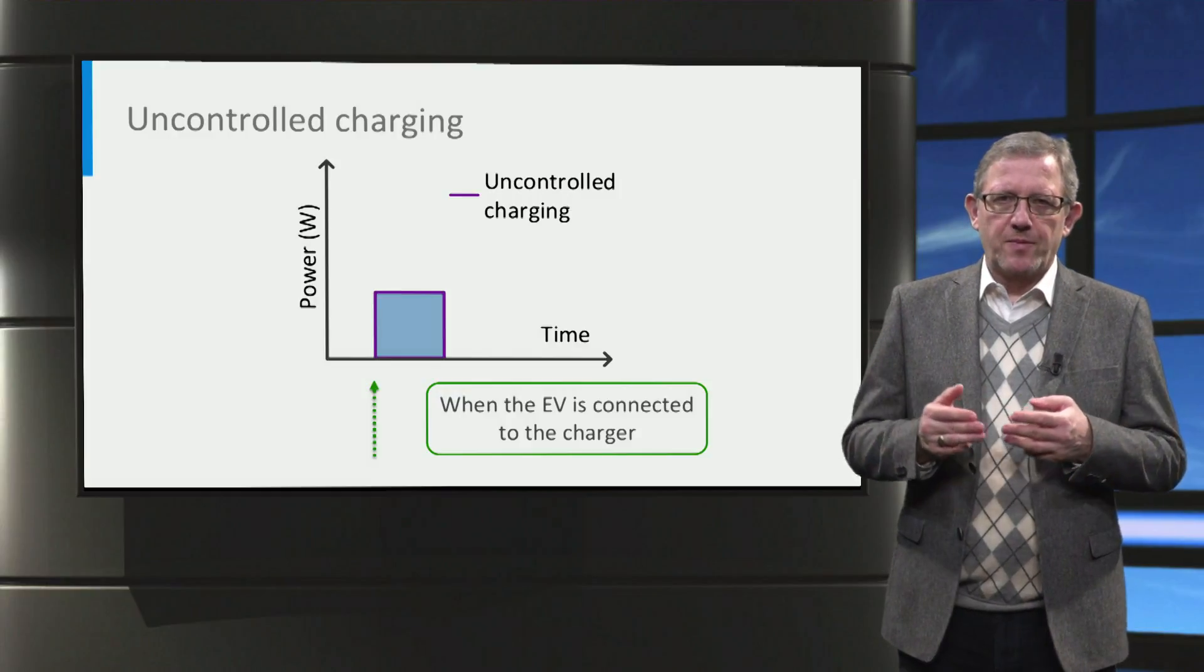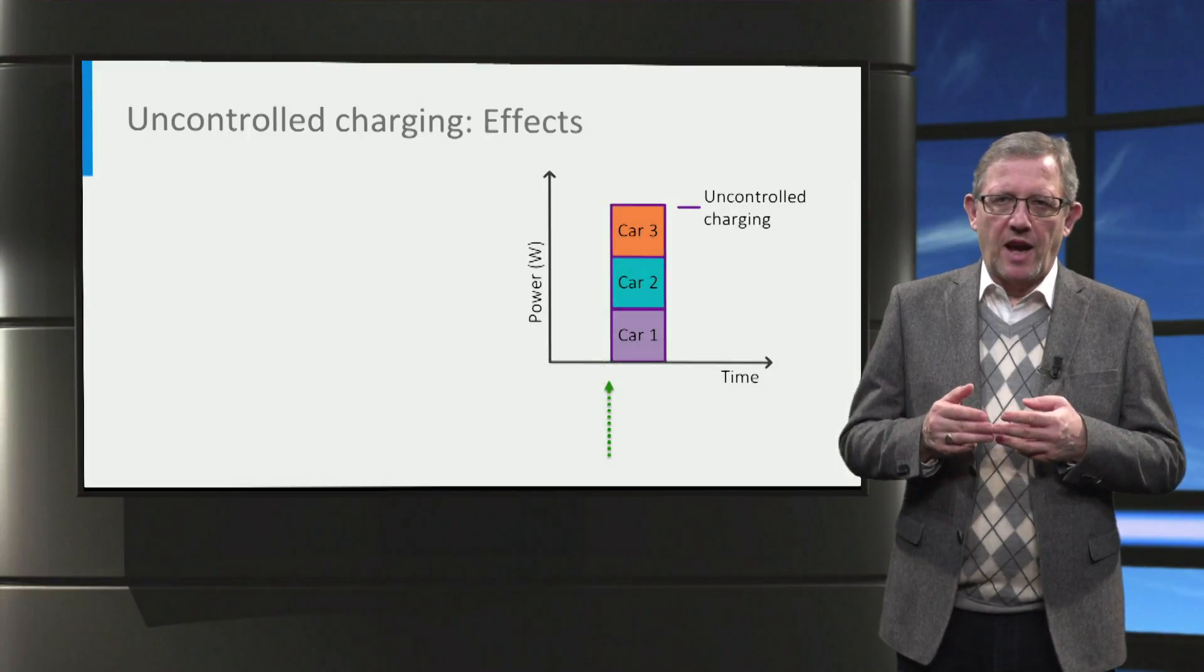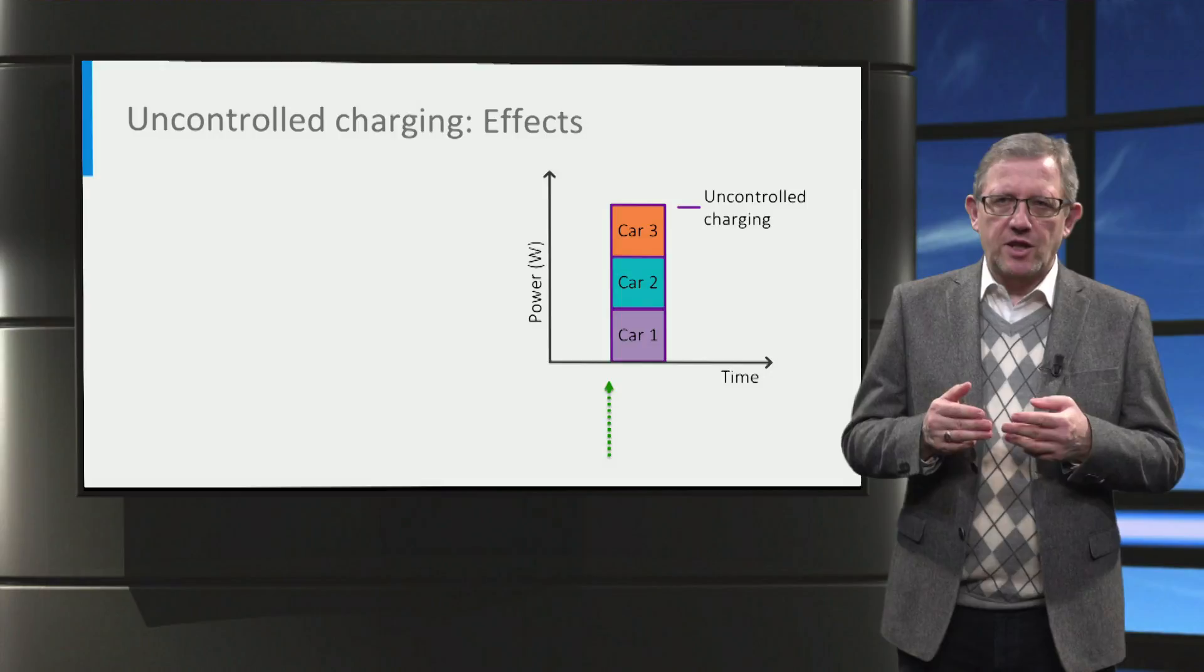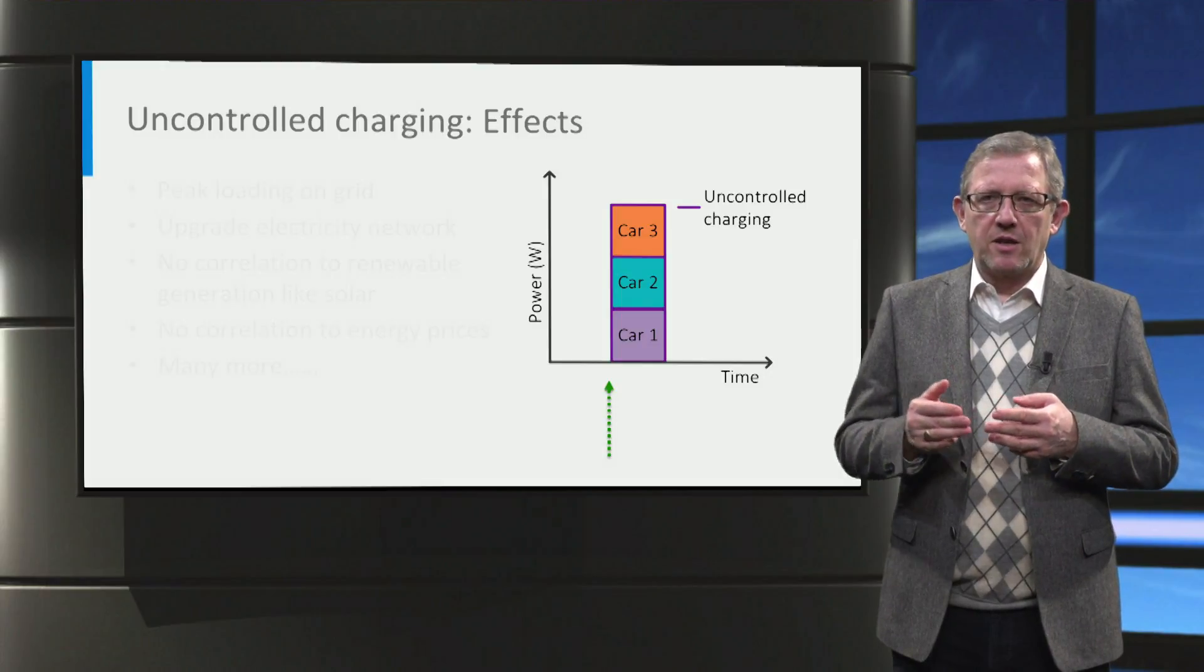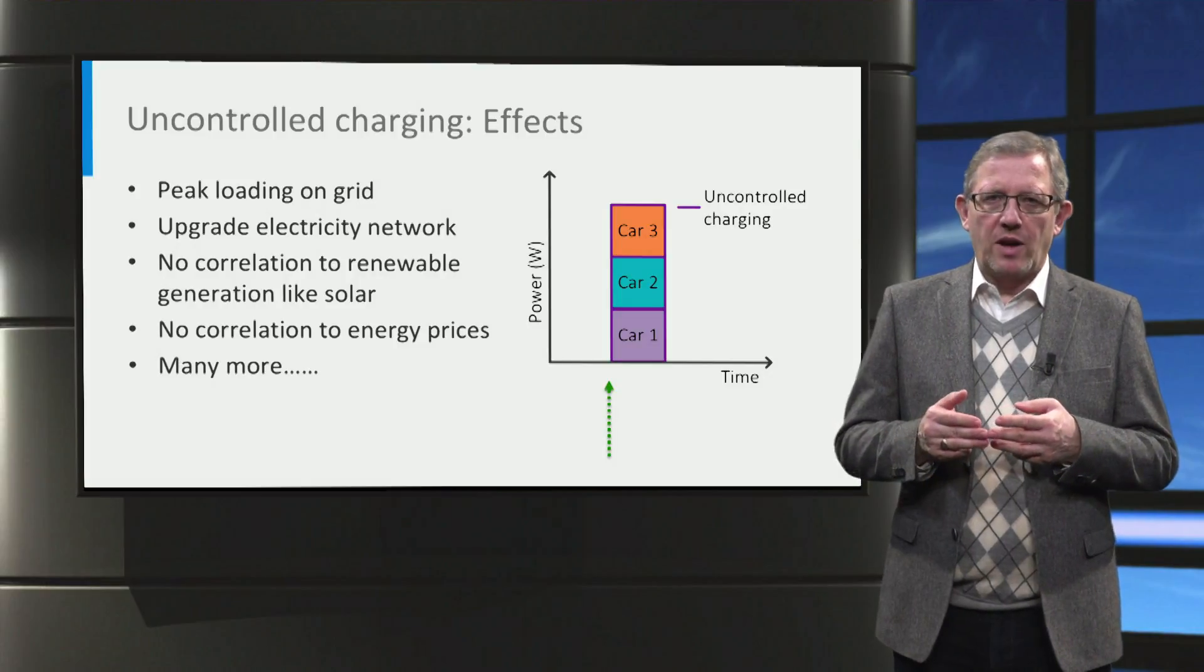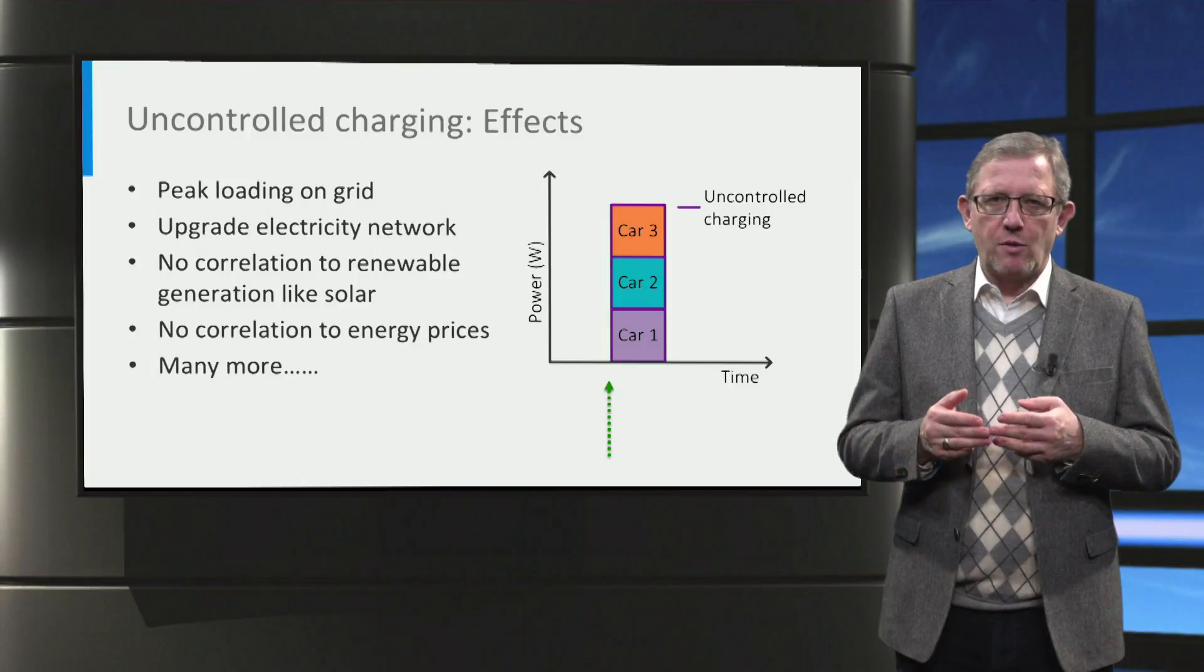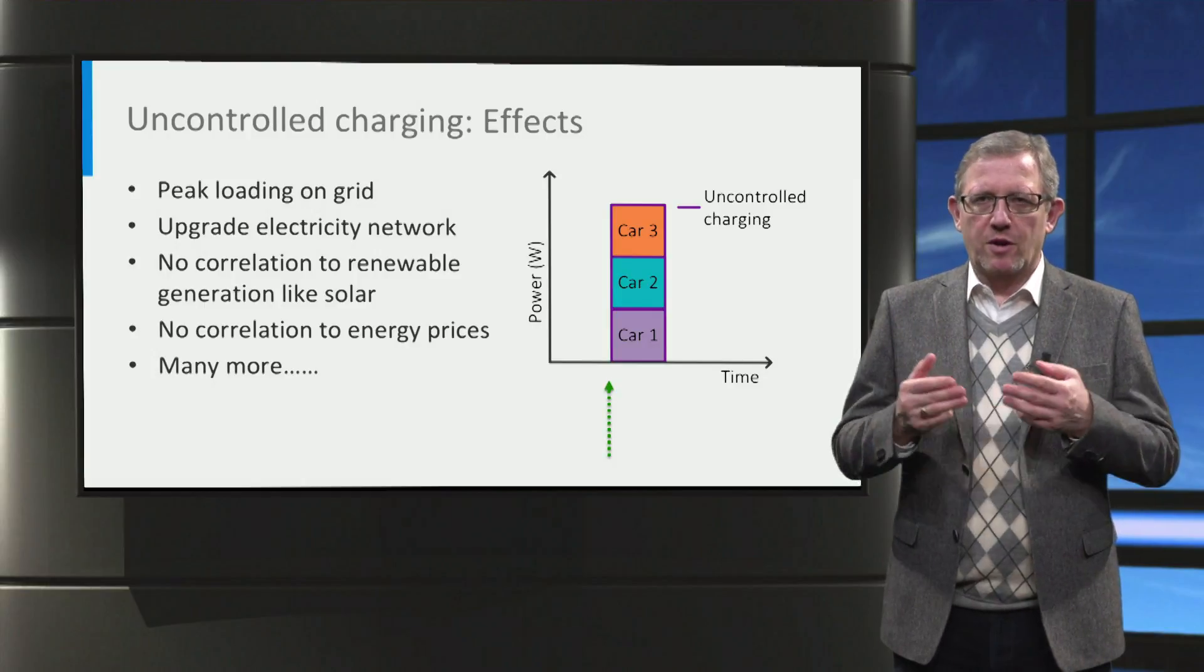Now what is the disadvantage of this? In the case of multiple cars connected at the same time, then all the cars will charge at the same time when they are plugged in. This may lead to a peak loading on the electricity grid. If the peak is too high, then power lines and transformers in distribution network will have to be upgraded. So more cables, more transformers.